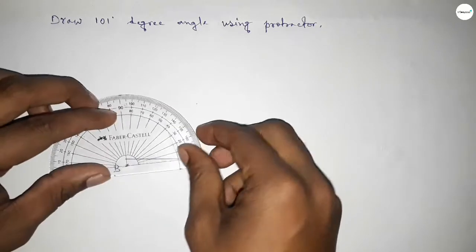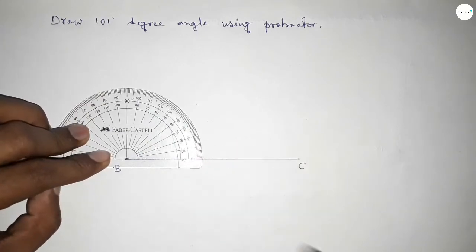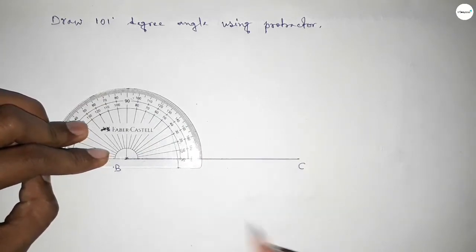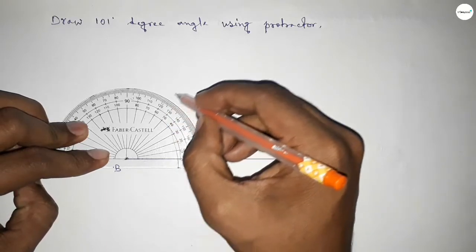Then counting the angles. So this is starting angle: 0, 10, 20, 30, 40, 50...